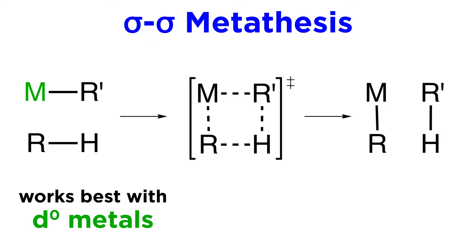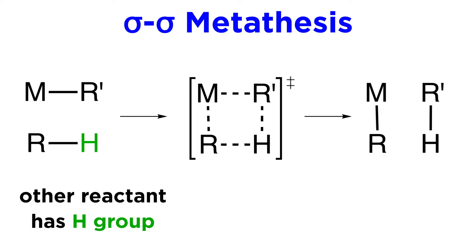It is important to understand that this works best with metals that are D0, or possessing no D valence electrons, as it needs open D orbitals to participate, and for the other reactant, hydrogen must be at least one of the groups if this sigma bond is to break.